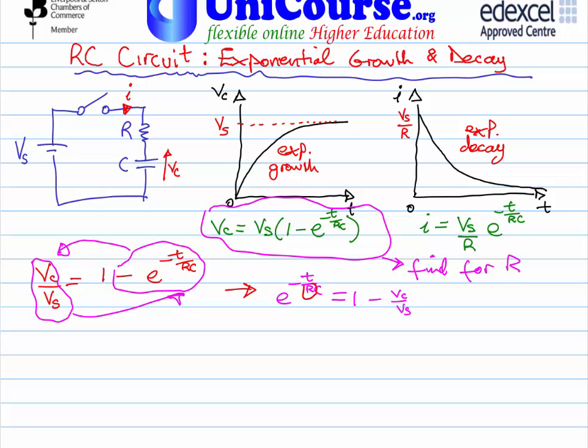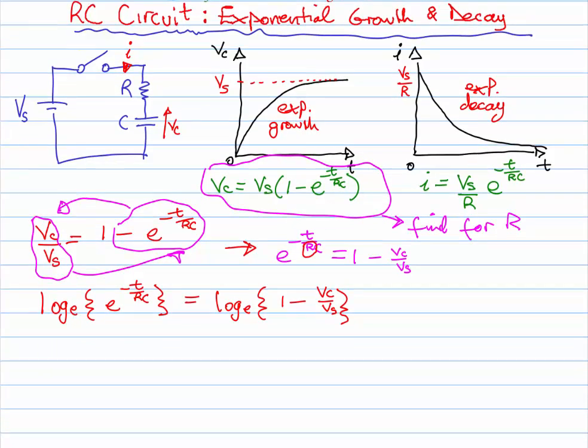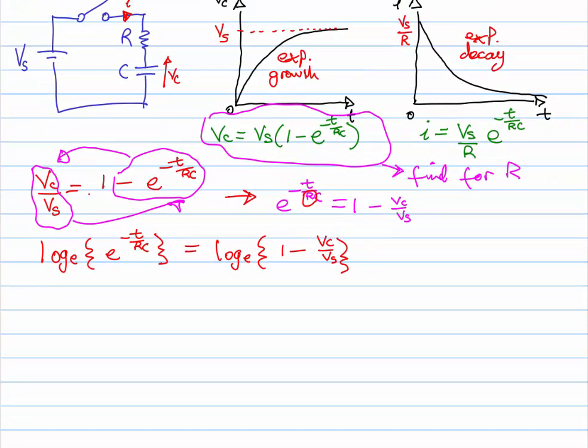What I'd now like to do is release this R term somehow, and the best way to do that is to hit both sides with a log base E. So we'll take the log base E of both sides: log E of E to the minus T over RC equals log E of 1 minus VC over VS. When you take the log E of E to the something, the answer is the something itself. So we're going to have therefore minus T over RC equals log base E of 1 minus VC over VS.